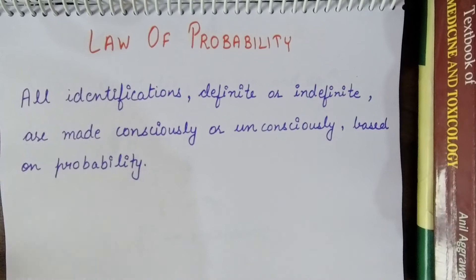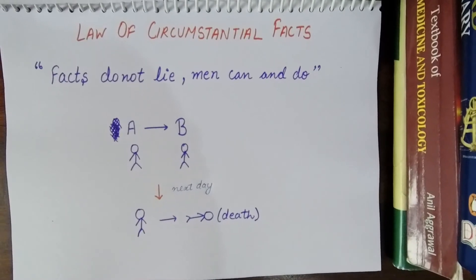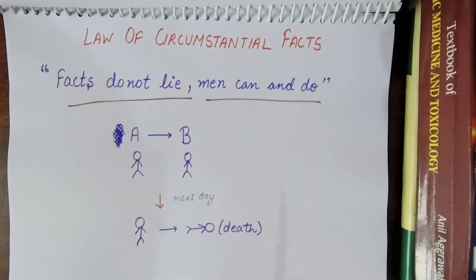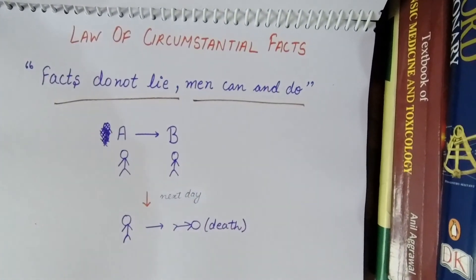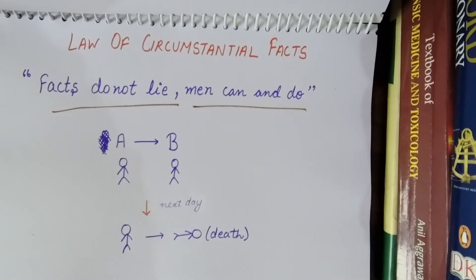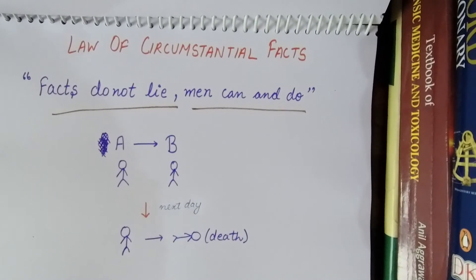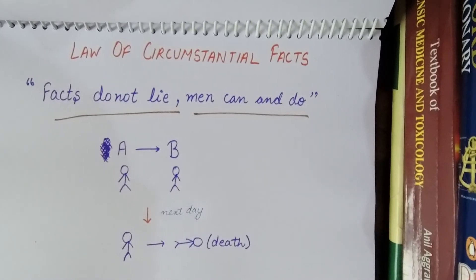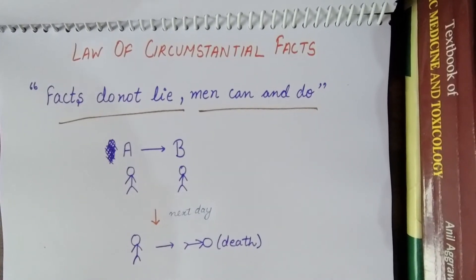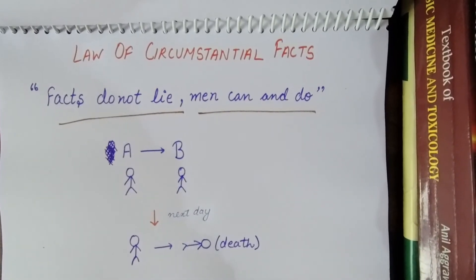And our last law is Law of Circumstantial Facts. It says that facts do not lie, men can and do. Like a man, he may be any eyewitness or victim. While giving evidence he may not always be accurate. He may intentionally lie or have shortcomings, or he may have poor eyesight or hearing. But a fact, suppose a physical evidence, physical evidence has a higher percentage chance of accuracy and will always be reliable.